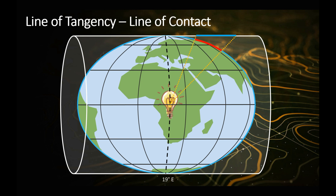So in Cape Town, we'd choose 19 degrees east, and in Pretoria you might choose 29 or 27. East London's 27. So as you move further east, you would use that longitudinal line.